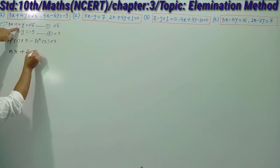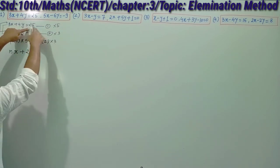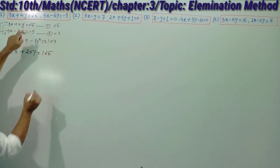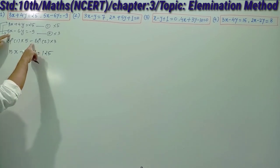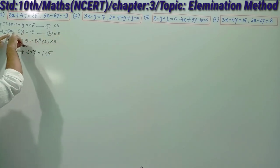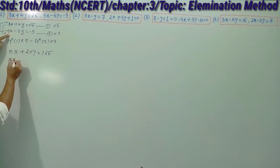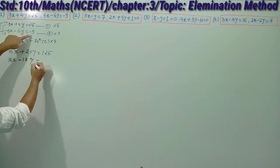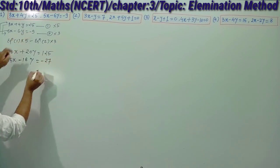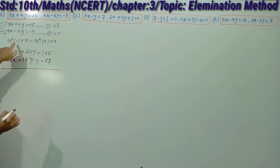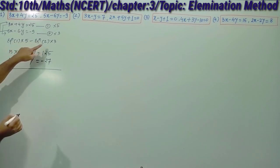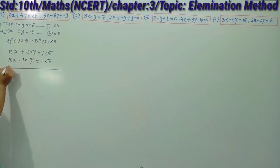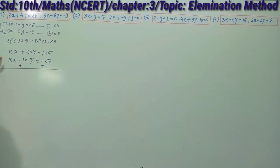After multiplying equation 1 by 5 we get 15x plus 20y equals 125. After multiplying equation 2 by 3 we get 15x minus 18y equals minus 27. Now subtracting equation 2 from equation 1, the signs change: minus becomes plus where needed. 15x and 15x cancel out.